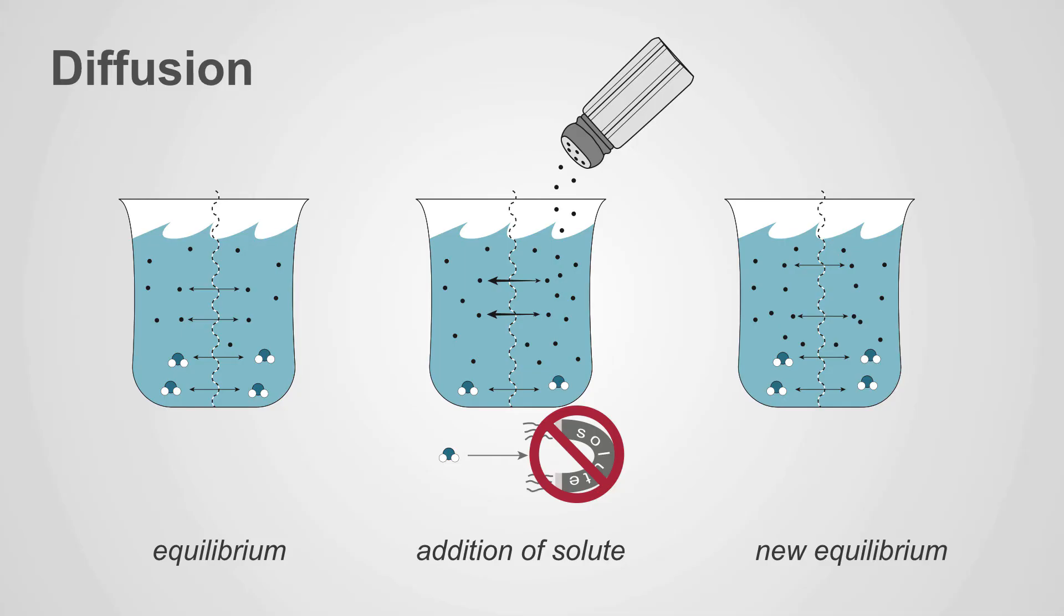In the end, you have a new equilibrium with solute equal on both sides of the membrane, but this time there is no net movement of water, just solute.